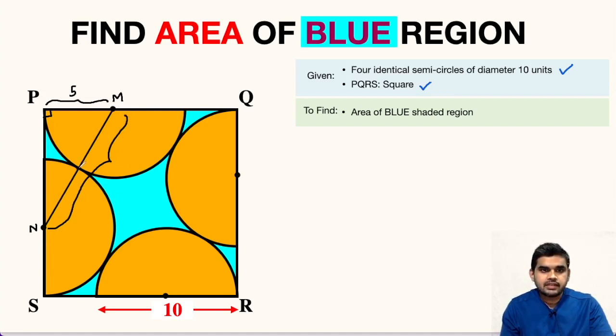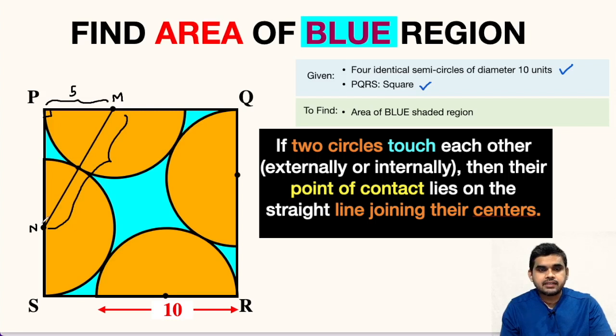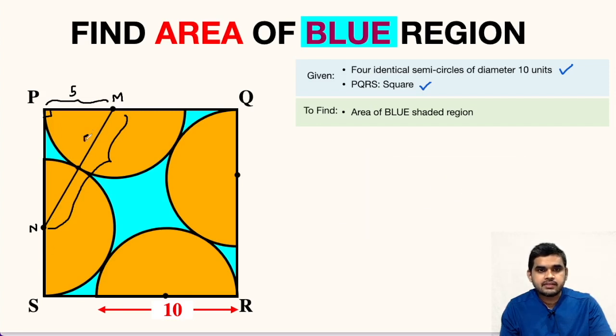You see that MN passes through the point of contact because we have a theorem that says that if you have a line segment which joins the center of two circles touching each other either externally or internally, then the point of contact lies on the line segment joining the centers of two circles. This length will be five and this will be five. So MN will be 10 units.